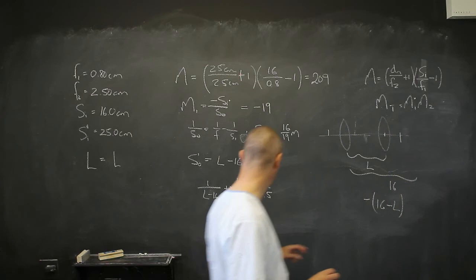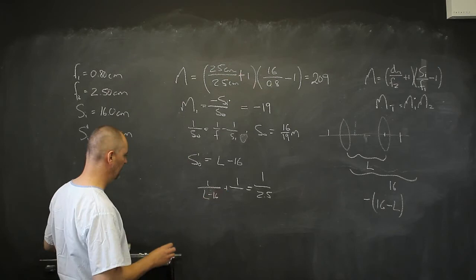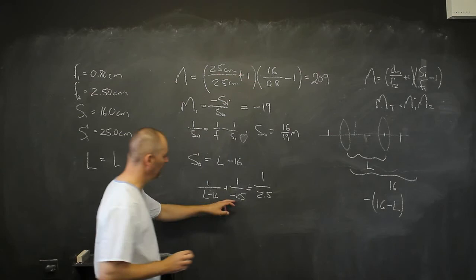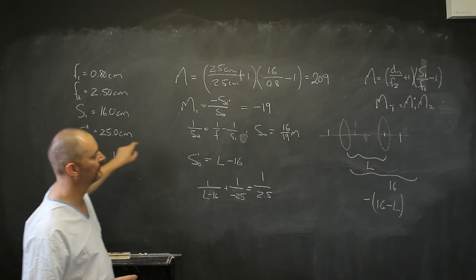I want this SI to be a negative 25. Why am I putting negative 25 in there? Because I know I want a virtual image.